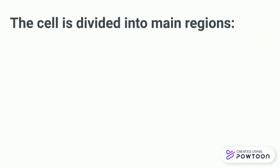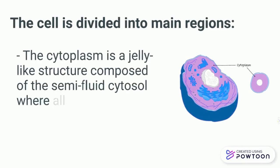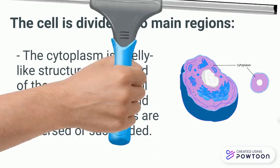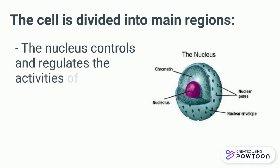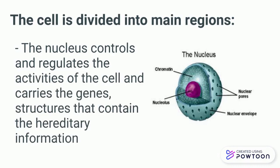The second one is the cytoplasm. The cytoplasm is a jelly-like structure composed of semi-fluid cytosol where all organelles and other cellular contents are immersed or suspended. And the third one is the nucleus. The nucleus controls and regulates the activities of the cell, like growth and metabolism, and carries the gene structures that contain the genetic information.